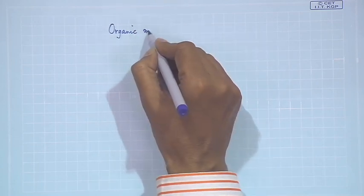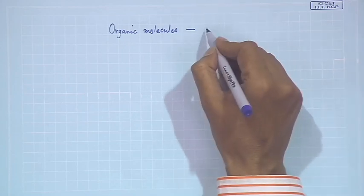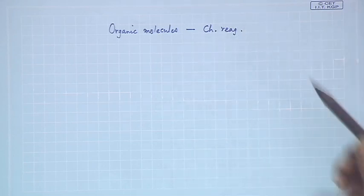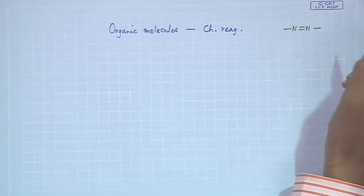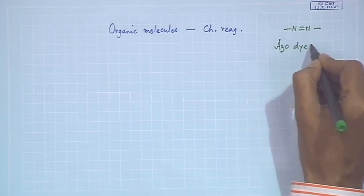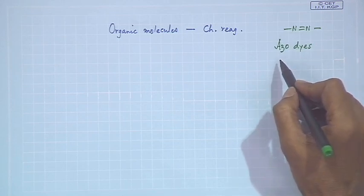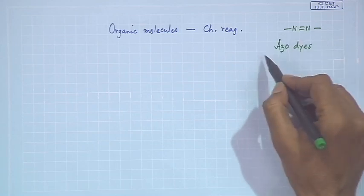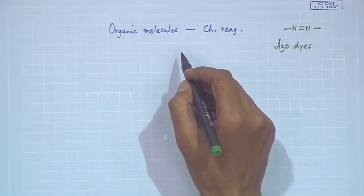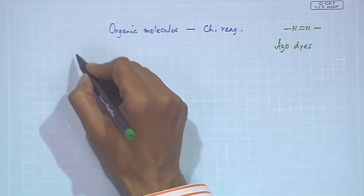Moving to organic chromophoric reagents: organic molecules with an azo function can act as chromophoric reagents. Azo dyes are widely used for dyeing fabrics and other materials. One example already discussed is the DMG molecule (dimethylglyoxime), useful for detection of Ni2+.